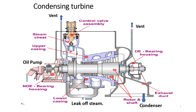Here you can see the control valve assembly. This is the steam chest, this is the complete rotor, this is the radial bearing on this side, and thrust bearing on the other side. Here is the gland.